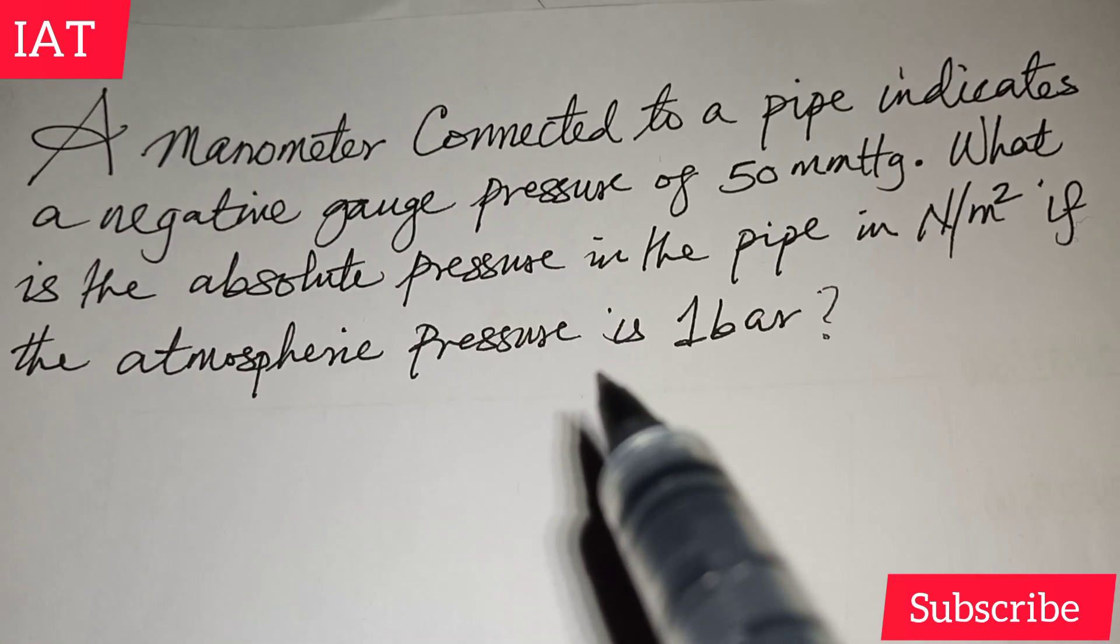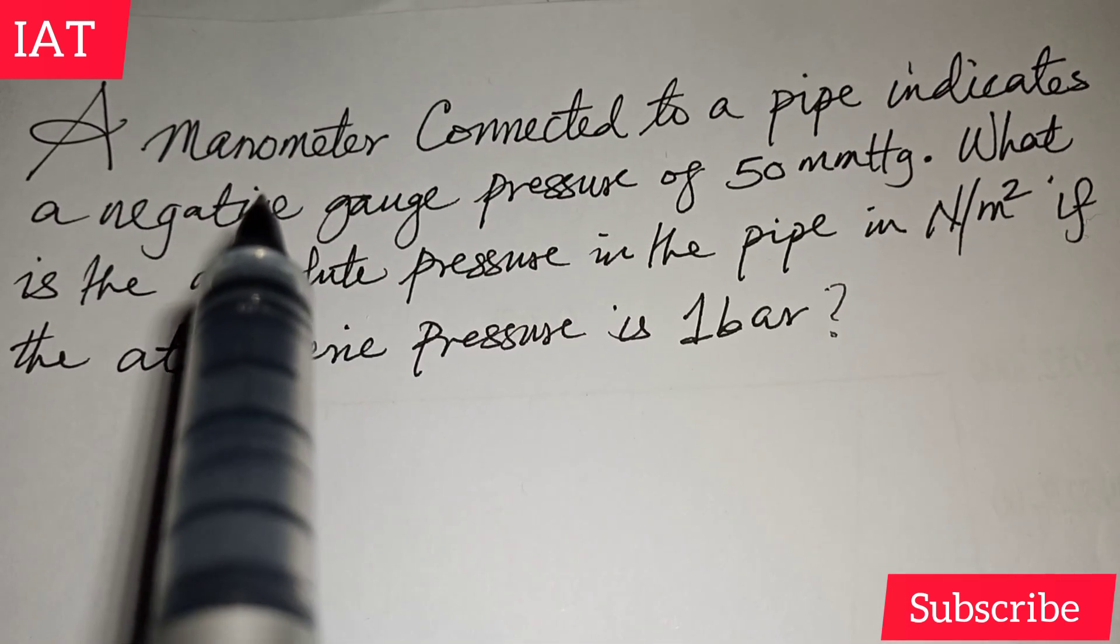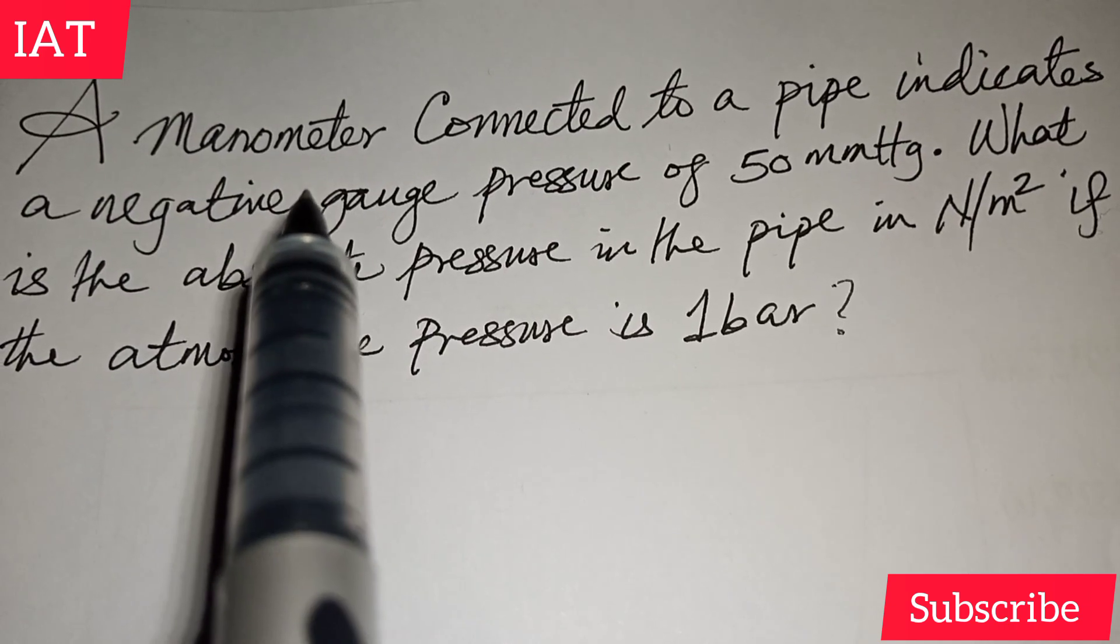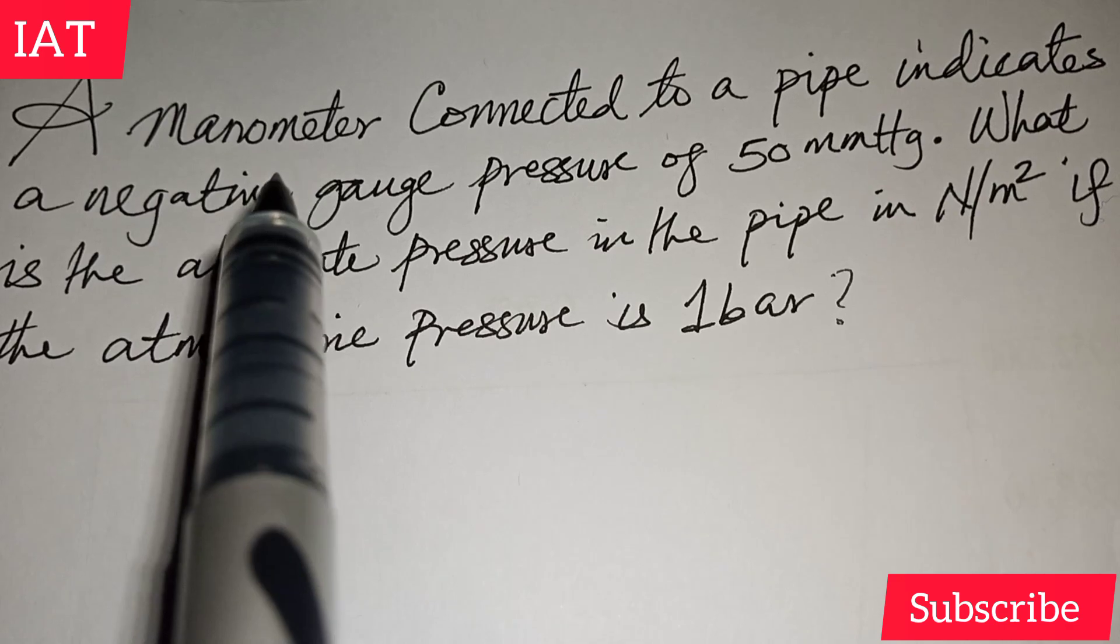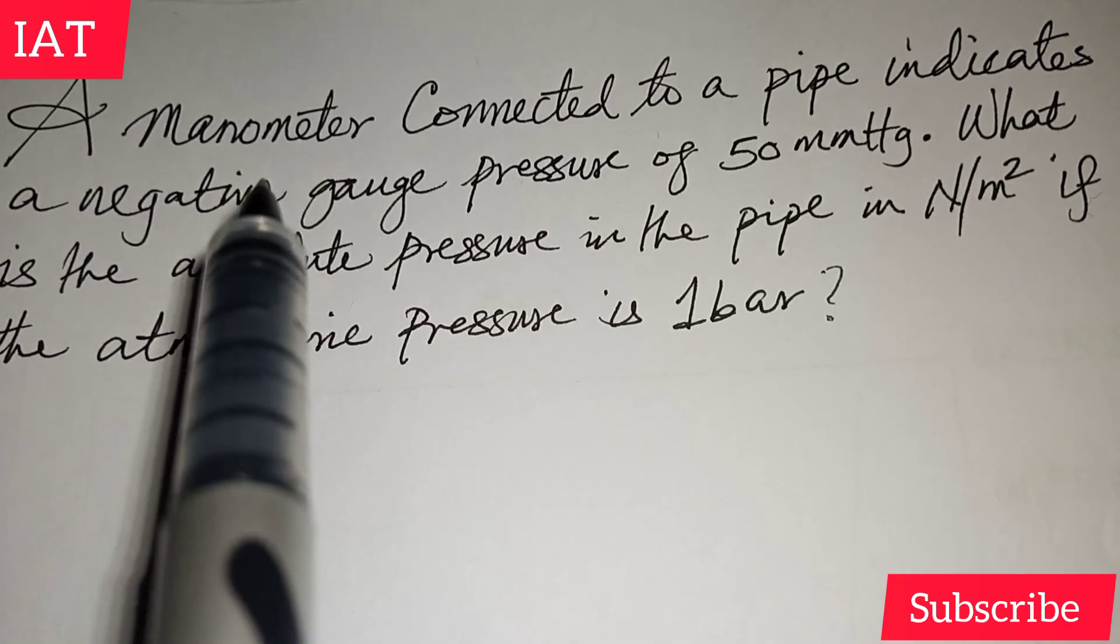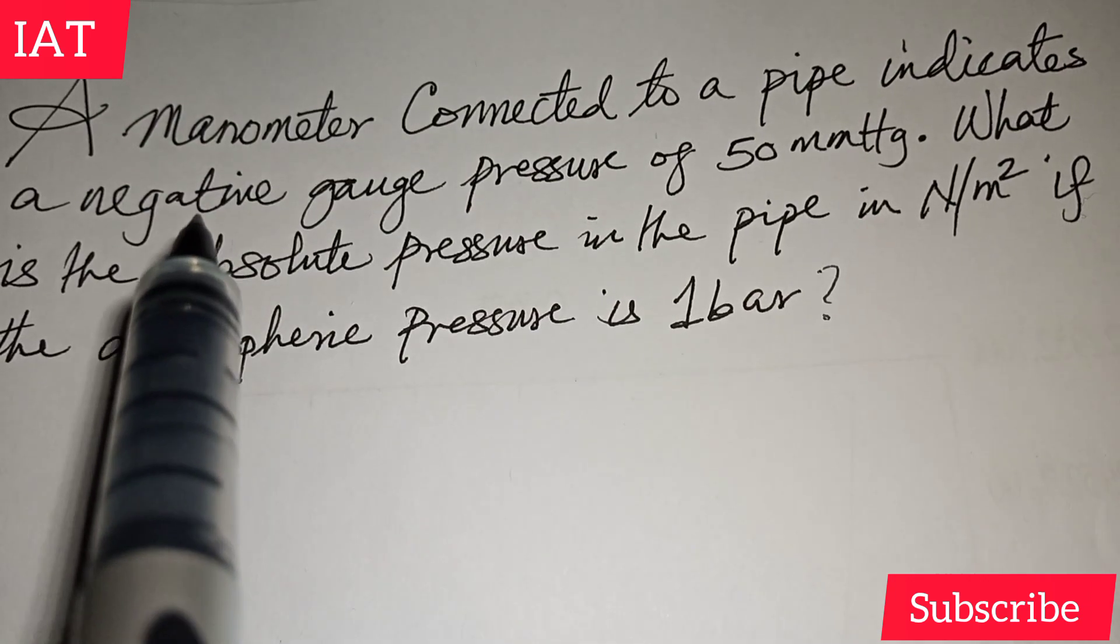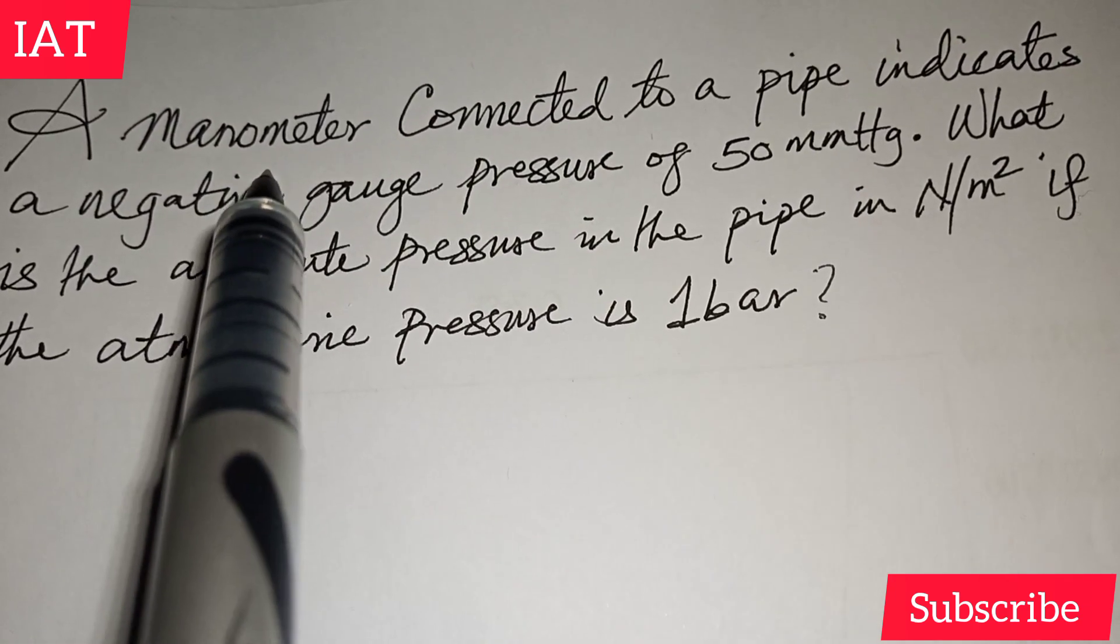So quickly, let's solve this problem. It says a manometer, but before we keep reading you need to know what a manometer is. A manometer is an instrument that is used to measure and indicate pressure. It has two types: we have the analog form and also the digital form.